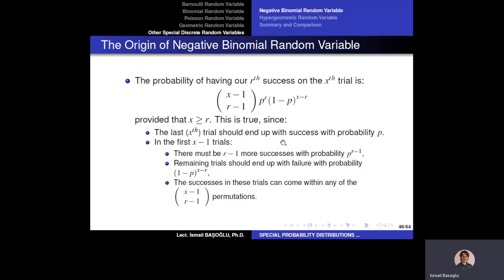If we are going to observe our r-th success in the x-th trial, our last trial — the x-th trial — must definitely be a success. In the previous x minus 1 trials, we should observe r minus 1 successes in any permutation. So in the first x minus 1 trials, there should be r minus 1 successes in any order. Therefore, we multiply the success and failure probabilities by the combination x minus 1 choose r minus 1, giving the probability of observing the r-th success exactly on trial x.